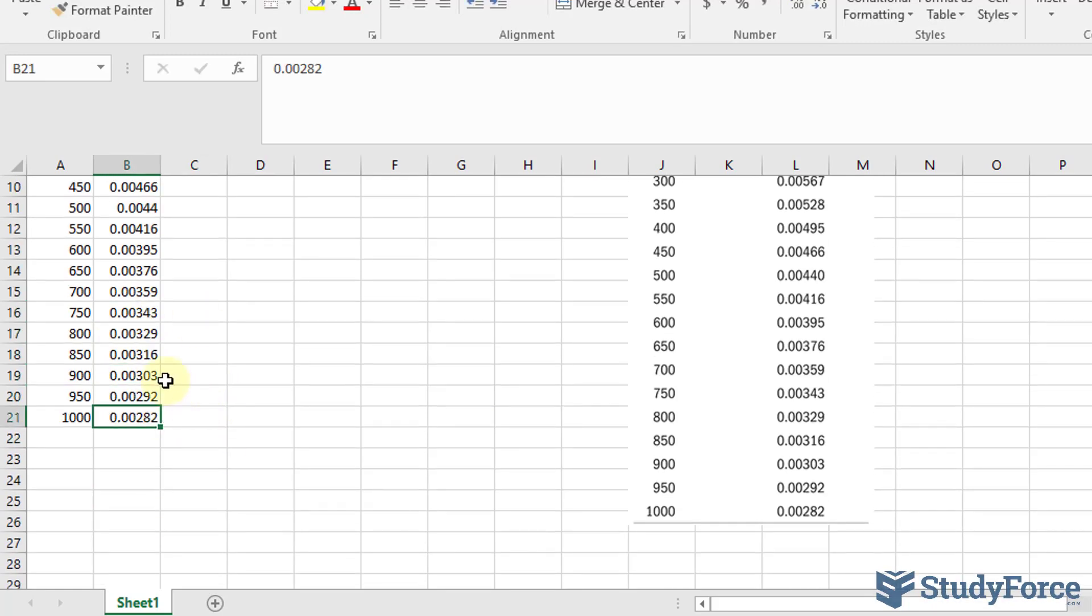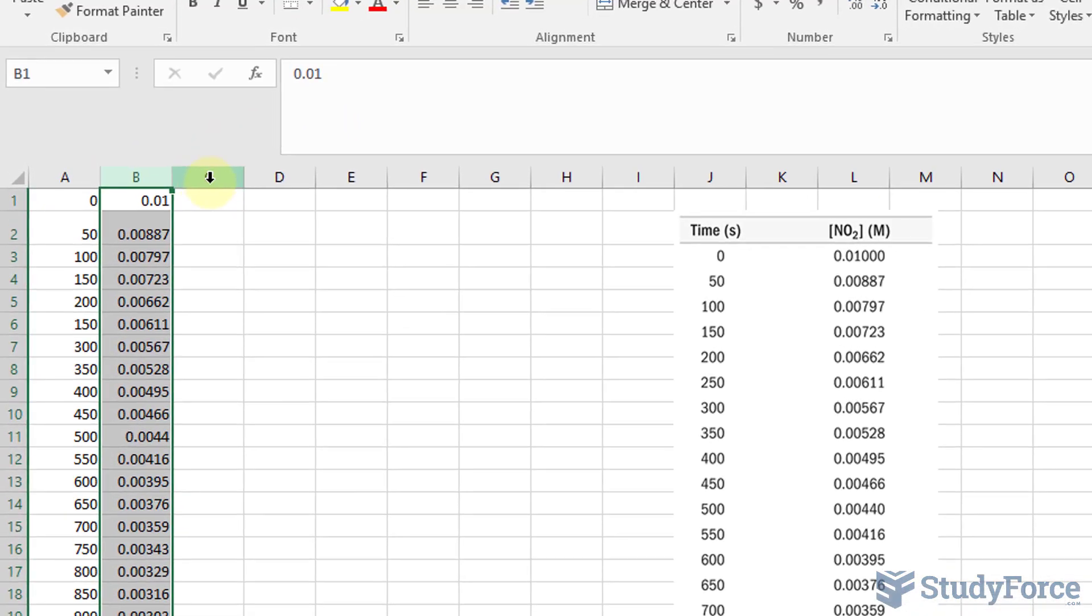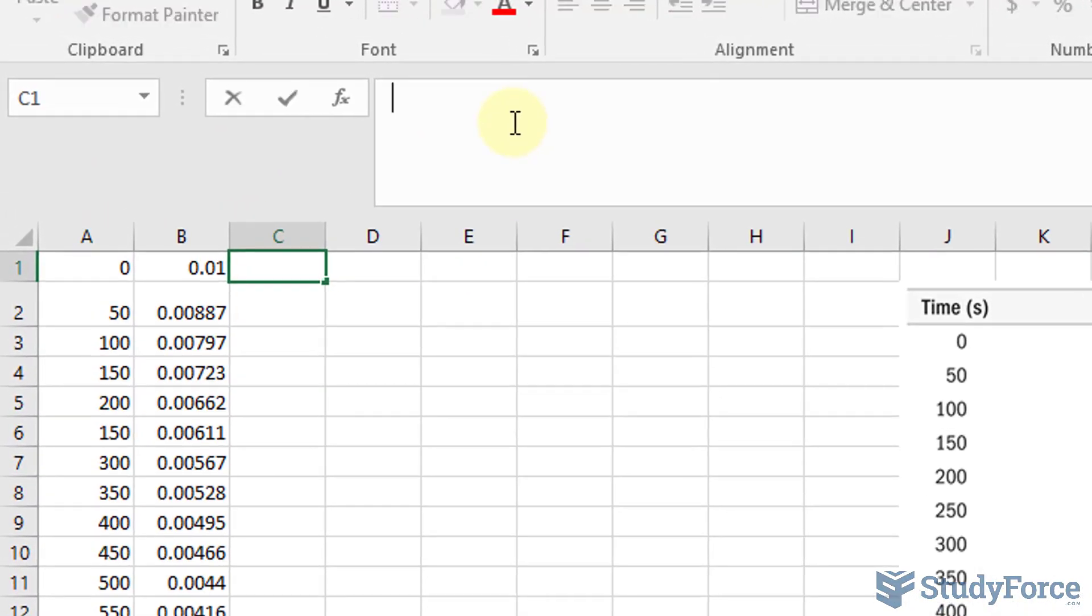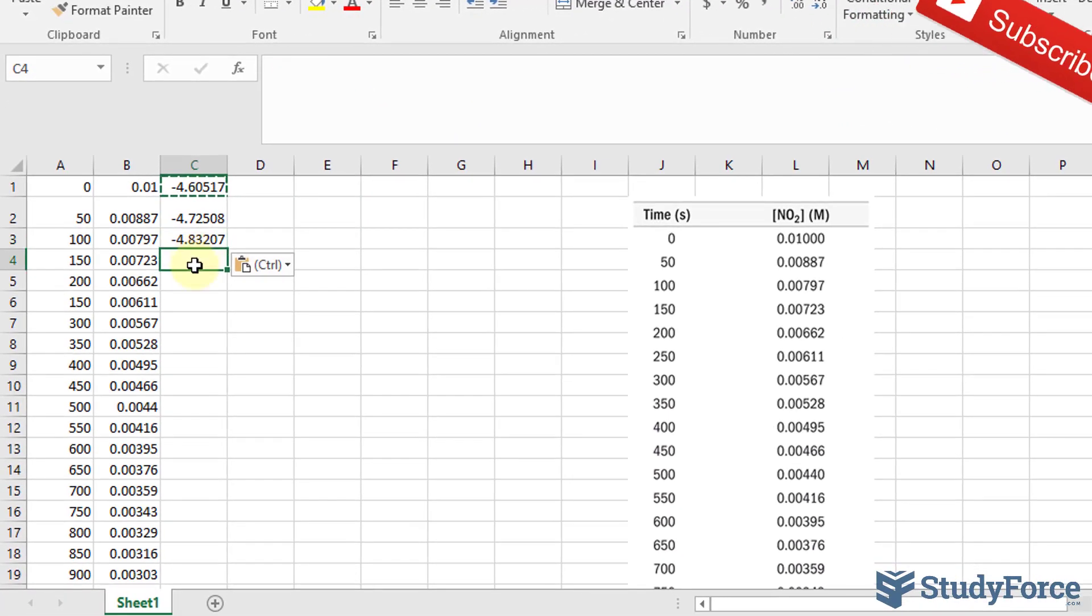Okay, now that I've recorded both the x and the y coordinates, I'm going to take the natural log of each of these numbers. To do that, I'll write in a formula where I take the natural log of this cell. Now, that gives us the following number, and I'll copy and paste that to each of these cells.